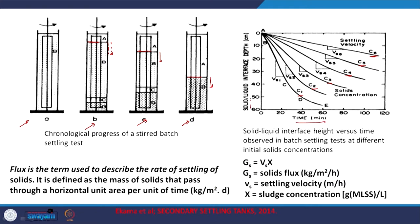The solid flux equals velocity of the interface times the concentration of that particular sludge. For design of the thickening basin there are two fluxes: one due to the underflow G1, and the other due to zone settling G2. Sludge is input at a particular rate and removed as underflow at a certain rate; thickening also occurs due to Type 3 settling at a particular rate. If the rate at which sludge is fed exceeds the total limiting flux, the interface will rise, potentially leading to overflow and unclear effluent.